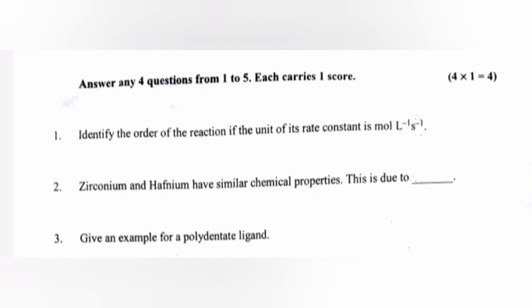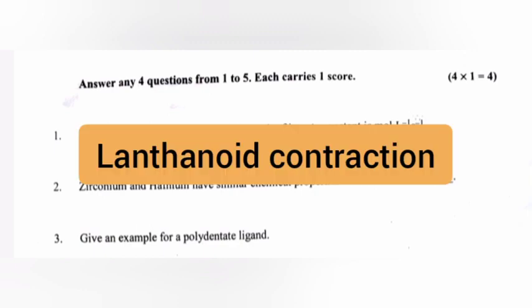Question 2: Zirconium and Hafnium have similar chemical properties. This is due to dash. Answer: Lanthanide contraction.